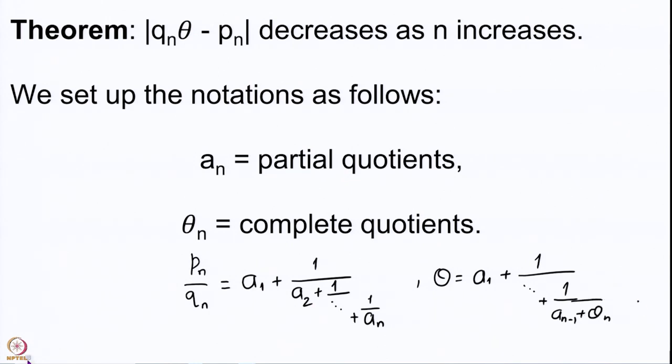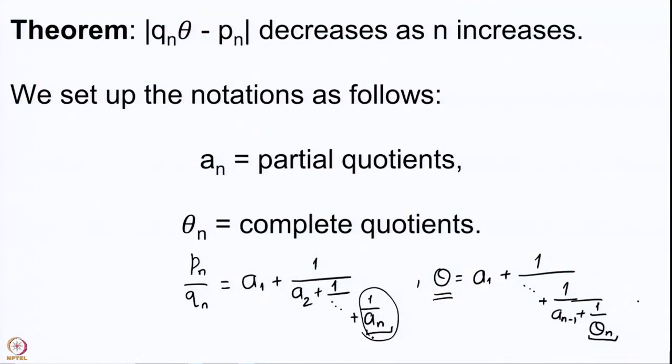To make sure we are on the same page regarding notation: θ = a₁ + 1/(a₂ + 1/(... + 1/aₙ)), and θ = a₁ + 1/(... + 1/(aₙ₋₁ + 1/θₙ)). So instead of aₙ we would have θₙ; once you have θₙ in place of aₙ you do get your θ back. Therefore these are called complete quotients — they give you the complete θ. The aₙ's give you partial information, so they are called partial quotients.